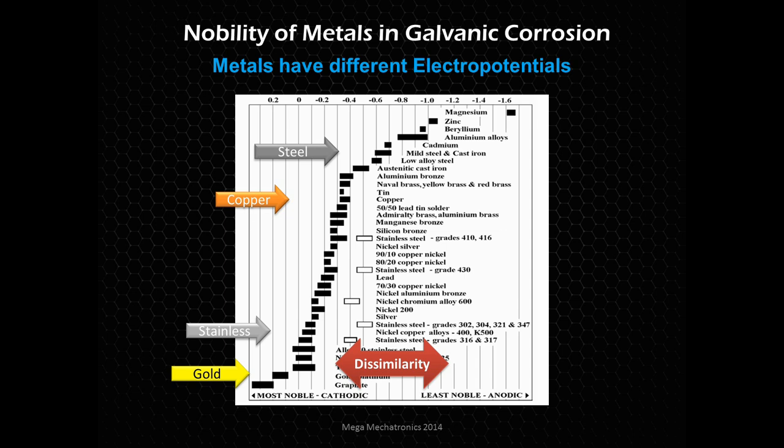The difference between the electropotentials is called the dissimilarity of the metals. Something very relevant to point out: copper and lead-tin solder are very close on this chart. That's why we use that type of solder with tin in it with copper — because they're so similar, we're not going to get galvanic corrosion since their electropotentials are nearly the same, so they're not going to eat each other up.